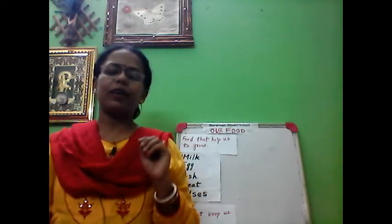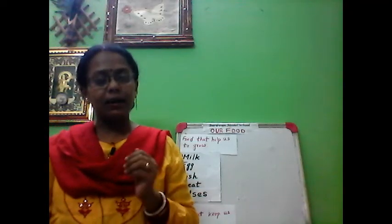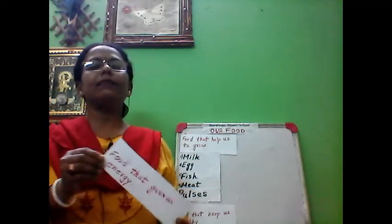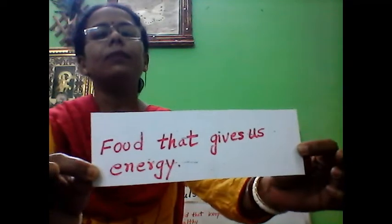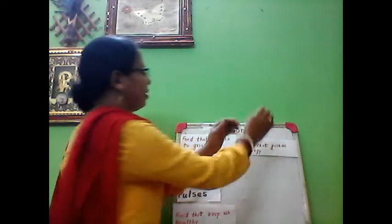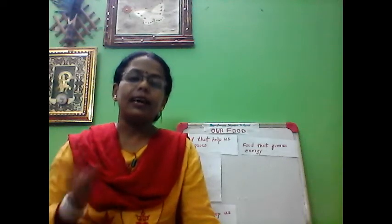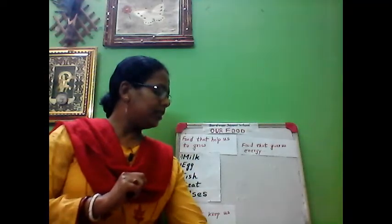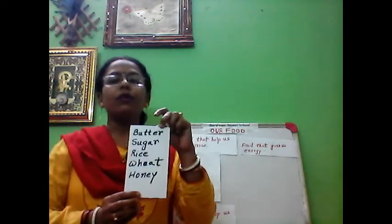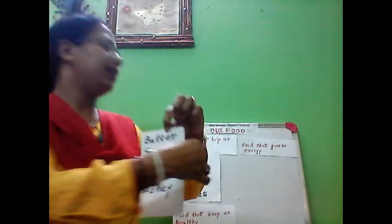The next category is food that gives us lots of energy — energy to work, study, play, and jump. The foods that give us lots of energy are butter, sugar, rice, wheat, and honey. I am putting this on the board.